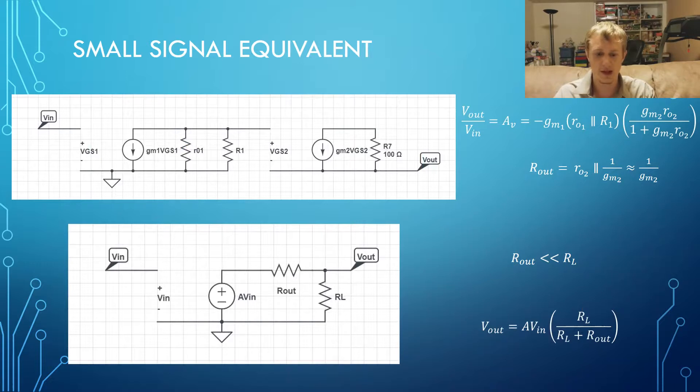So now let's look at the small signal equivalent of the second transistor. Our result will be the circuit on the top and the two equations to the right of the figure. In this case, our output resistance is much smaller because 1 over gm2 is a very small value. Our equation for the output voltage will be the same as it was in the previous circuit. But this time, because Rout is much smaller than RL, most of the voltage will drop across RL.